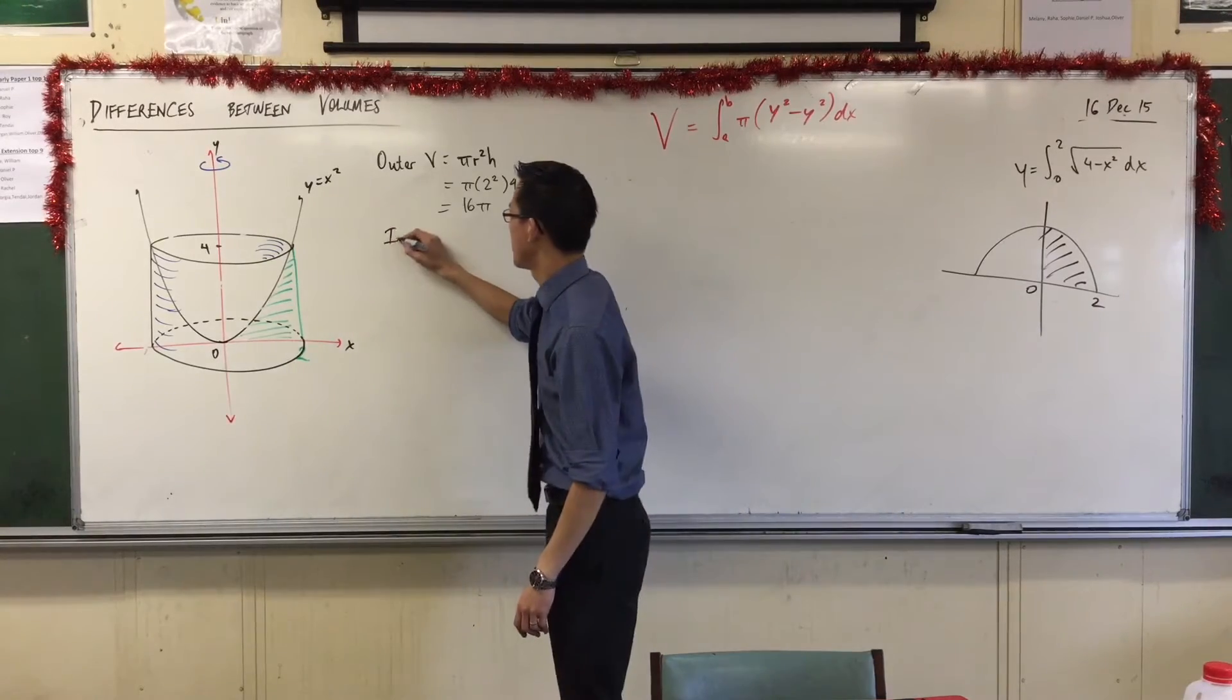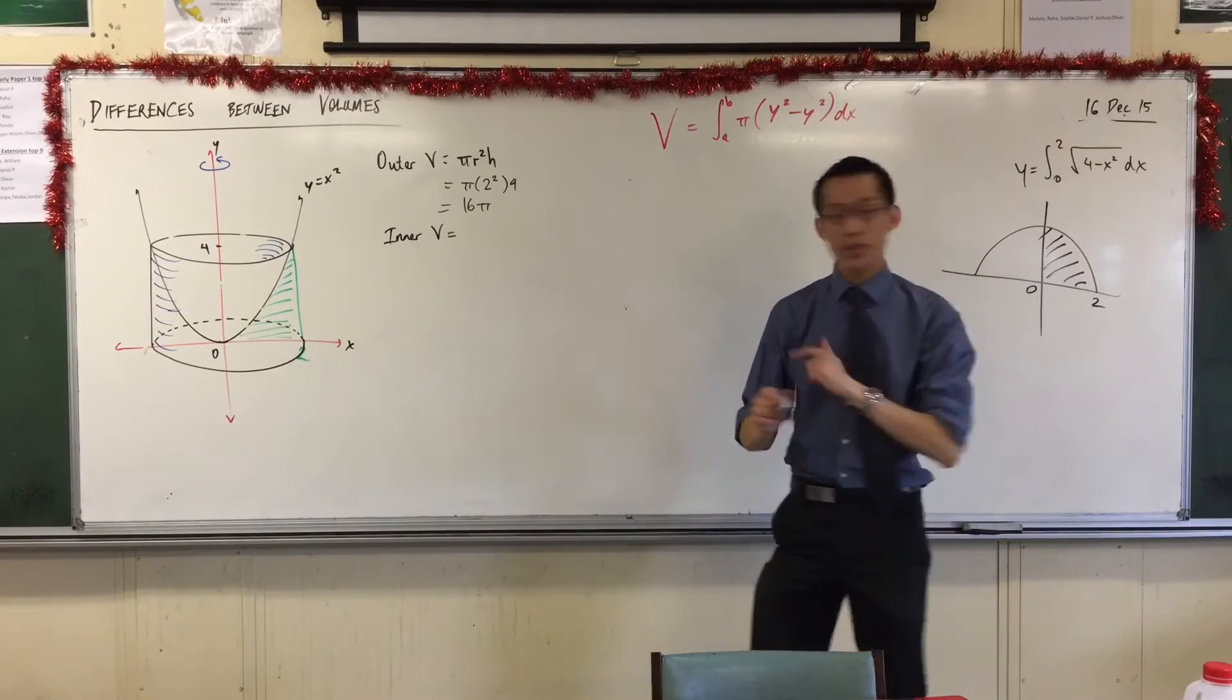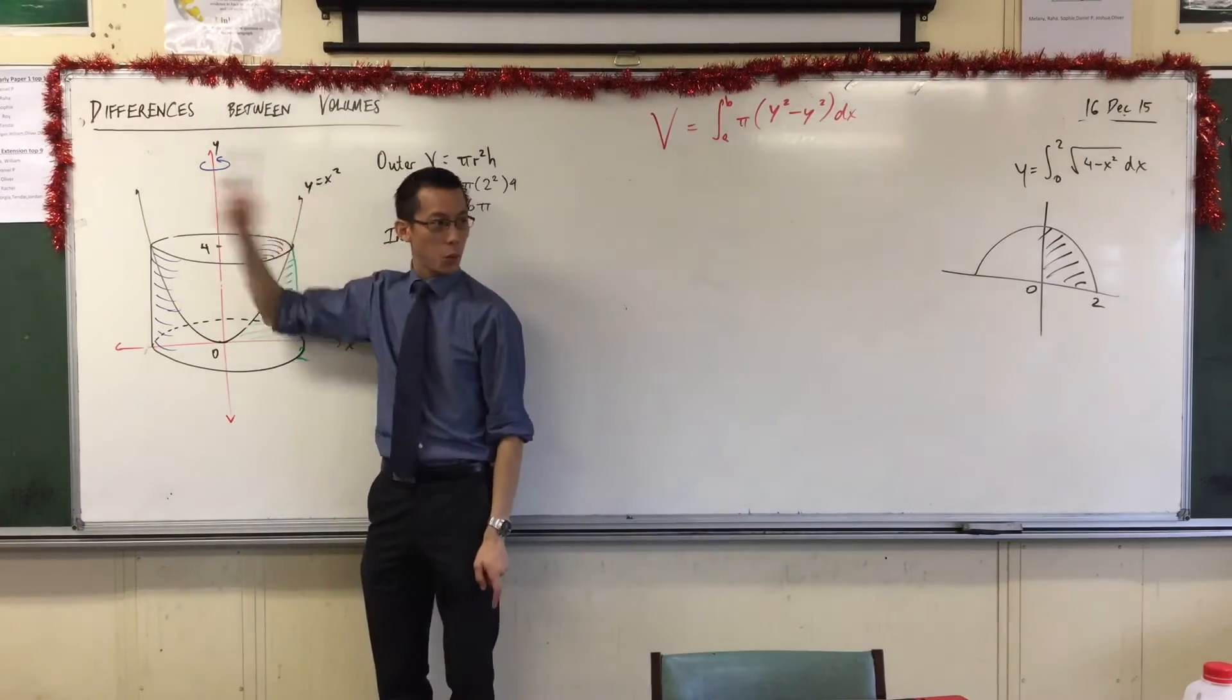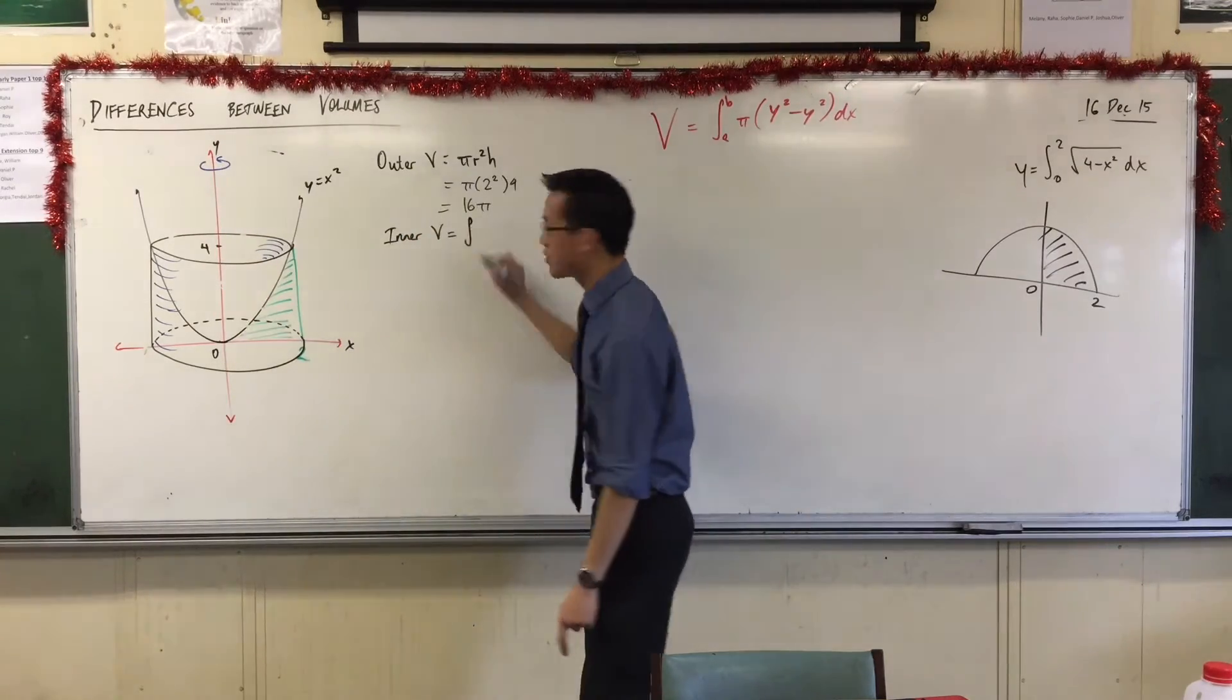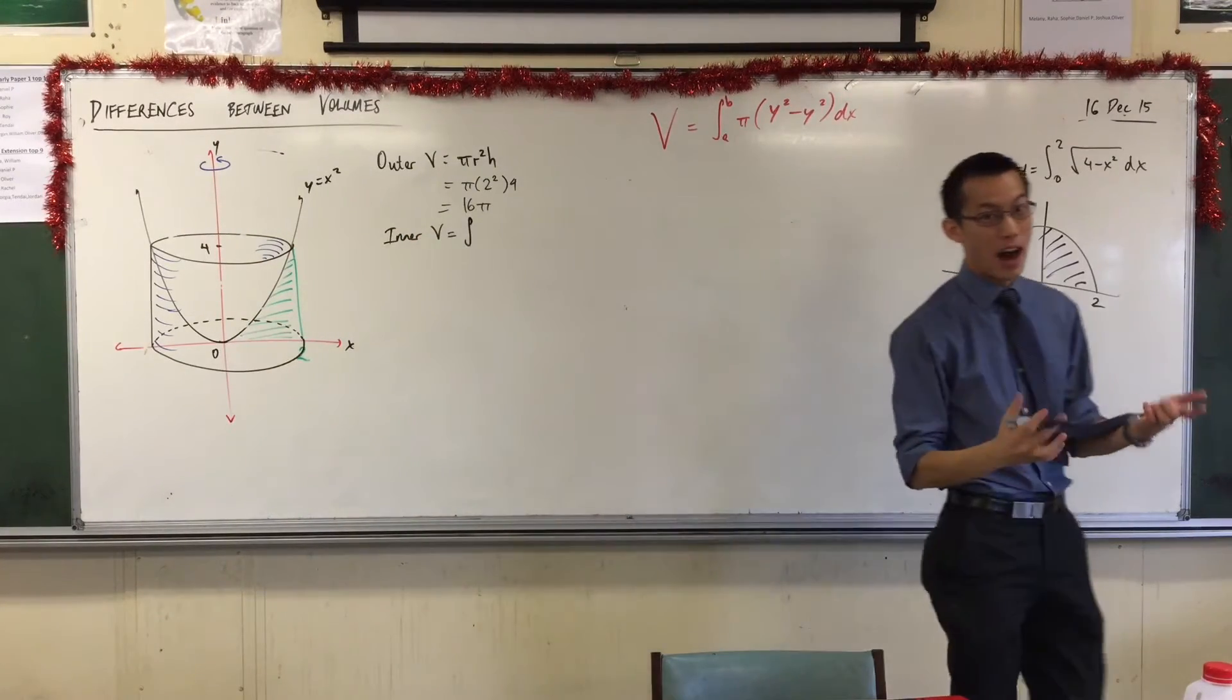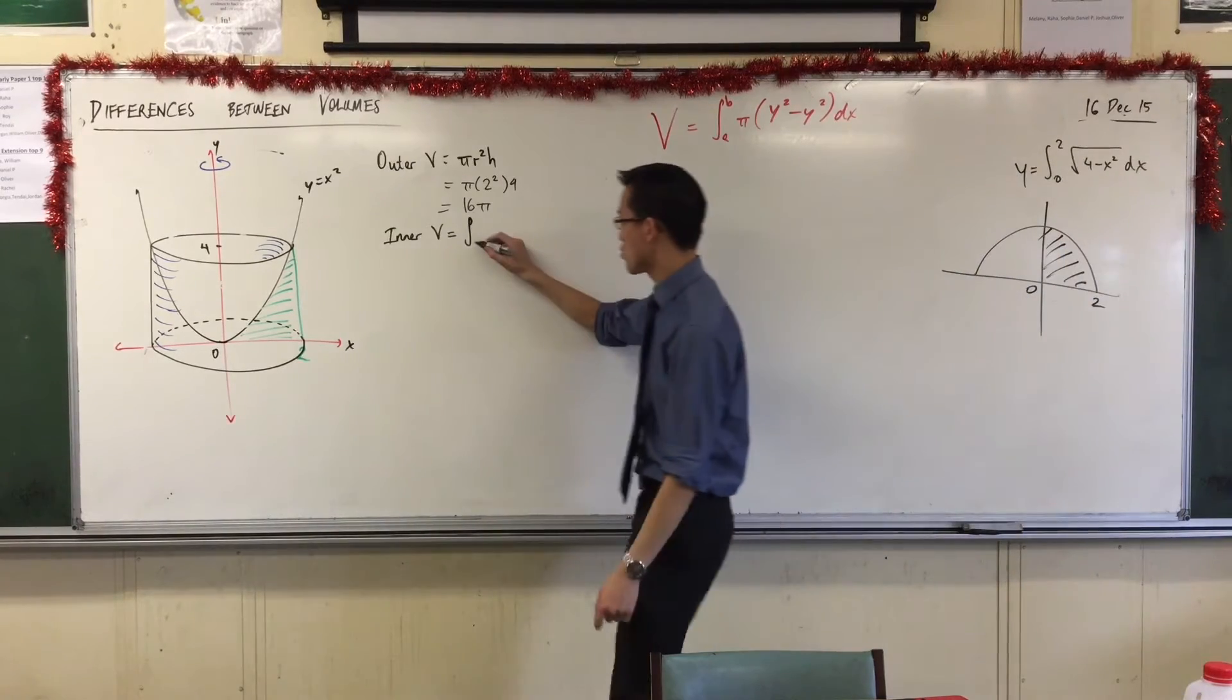There's the outer one. Let's do the inner one. This takes a little more work. Not much though. I'm integrating with respect to y because that's the axis I'm rotating around. So being that I'm integrating with respect to y, I need upper and lower boundaries for y, which are 0 and 4.